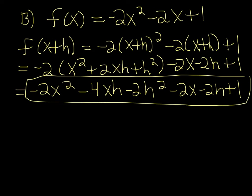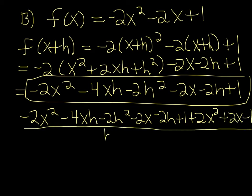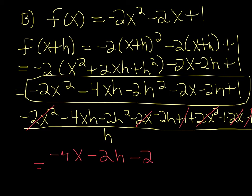Then they want the difference quotient, which is to subtract the original function. So we write f of x plus h, then subtract negative 2x squared — that would be plus 2x squared, plus 2x, and minus 1 — all over h. You can cancel: negative 2x squared and 2x squared, negative 2x and positive 2x, plus 1 and minus 1. Dividing everybody by h gives minus 4x minus 2h minus 2, which is your answer to part B.